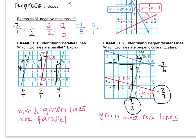So I'll say the green and red lines. You can number the lines or describe them however you want. But I'm going to write green and red lines are perpendicular.